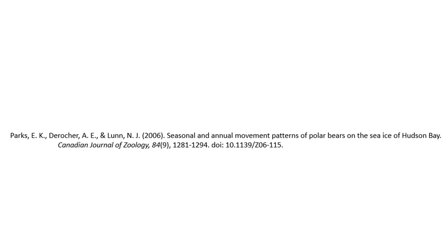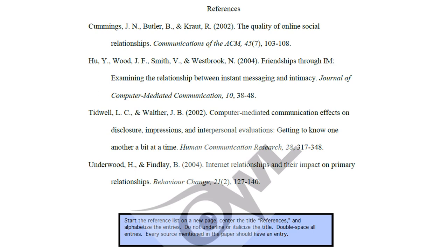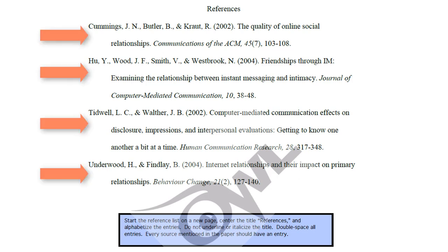Here is an example of a standard APA citation for an electronic journal article. You can also find it in the tutorial transcript. First, I'll point out that your references on your reference list should be alphabetized and should use a hanging indent, which means that the second line and any subsequent lines are indented. Now let's talk about the citation.